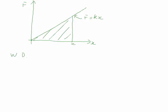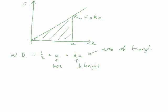Work done going out to extension x from zero: it's going to be one-half times the base x times the perpendicular height kx — so this is just the area of a triangle. That gives us one-half kx squared. So that's nice and easy. We can do it by the area of a triangle. If we want to do it more generically using integration, the work done is the integral of kx dx.